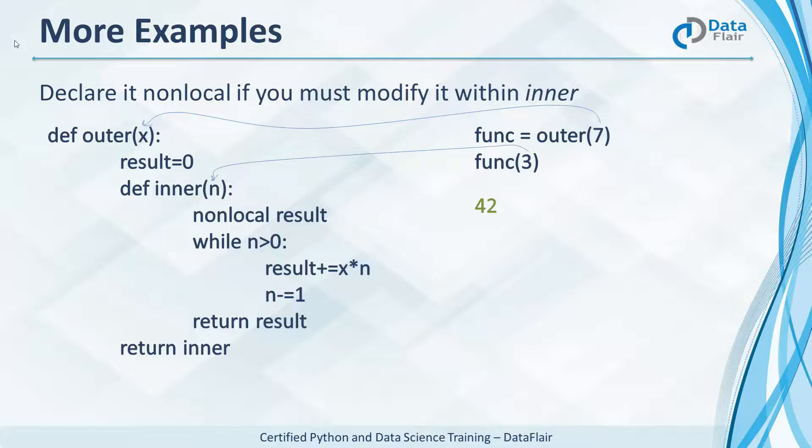So result is 7 into 3 plus 7 into 2 plus 7 into 1. This is equal to 7 into 6 which is 42.